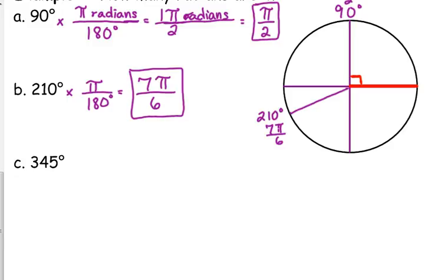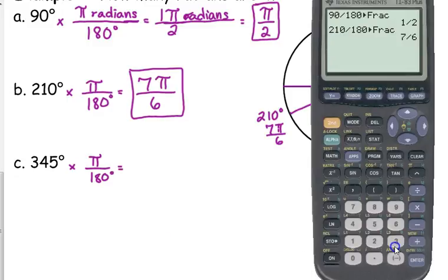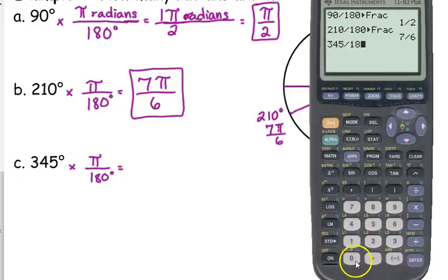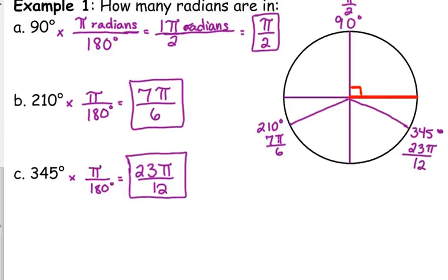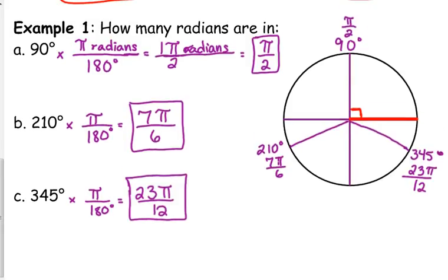345 degrees. Multiplying it by π over 180. Again, just simplifying that fraction. 345 over 180. That's 23π over 12 radians. 345 degrees is almost a full rotation, so we're over here, right below our line where we started. And that is the same as 23π over 12 radians. It's not difficult. It's just remembering that relationship. π to 180 and knowing how to simplify.